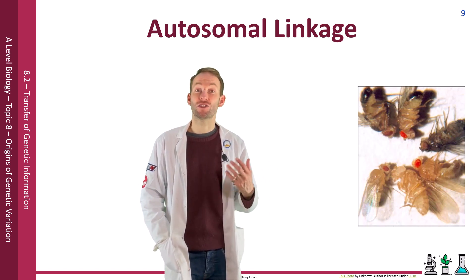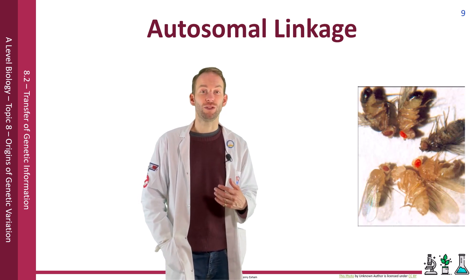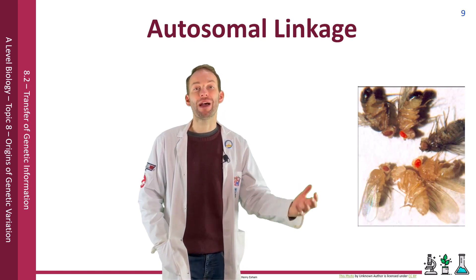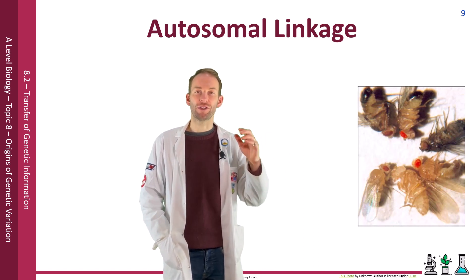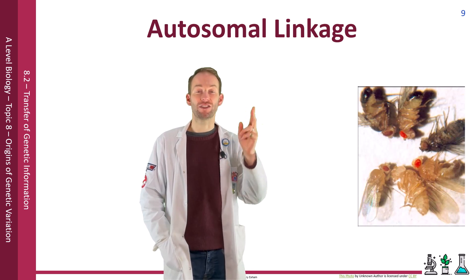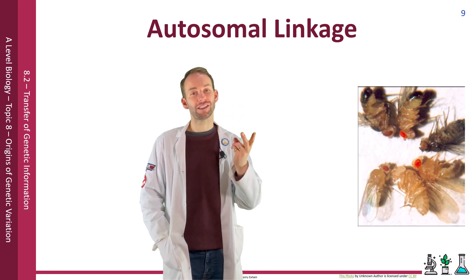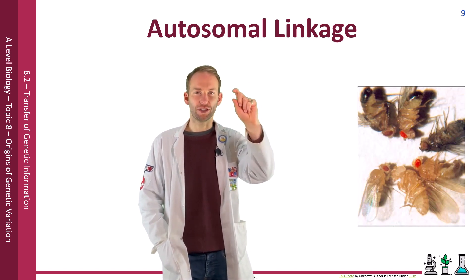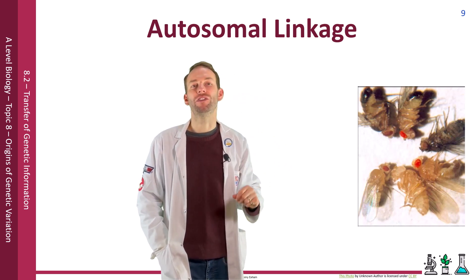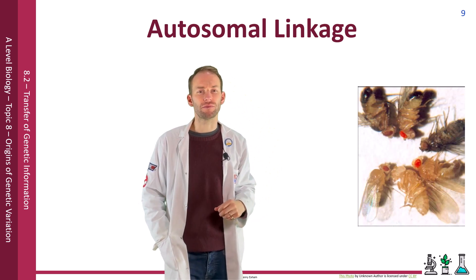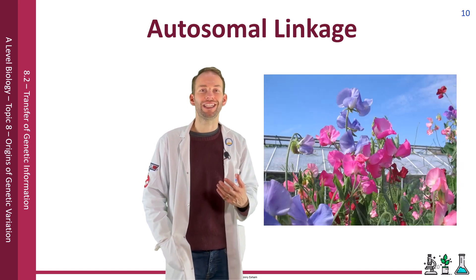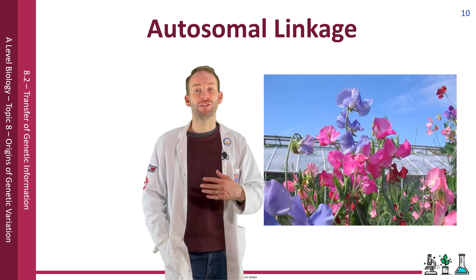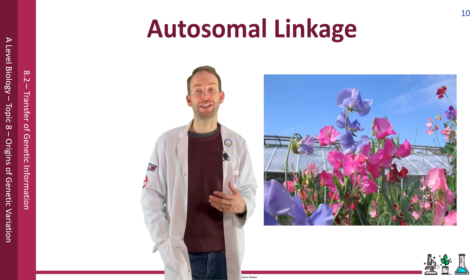Why does that happen? Mendel's law of independent assortment doesn't apply to all allele combinations, because if those genes are located on the same chromosome they may be inherited as a pair. If both genes are on the same chromosome, inheriting one homologous pair means you get both genes on that same chromosome together. This is what we call autosomal linkage.